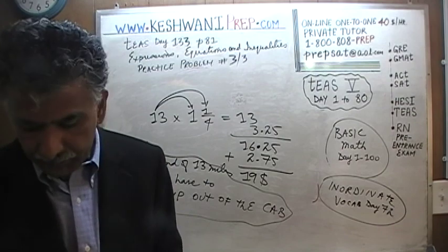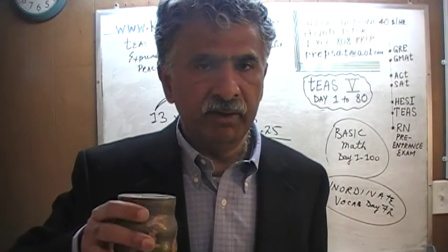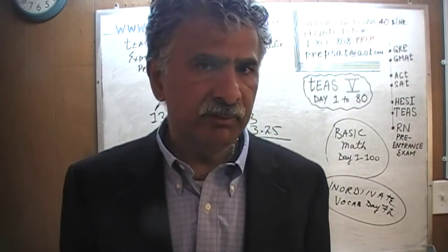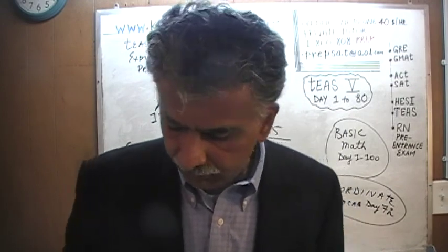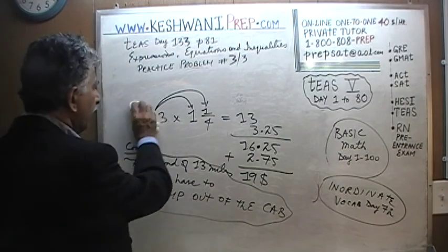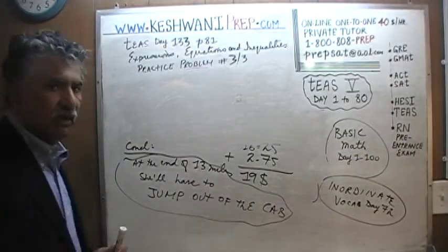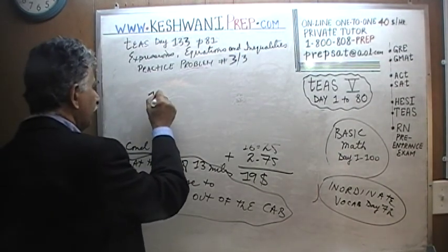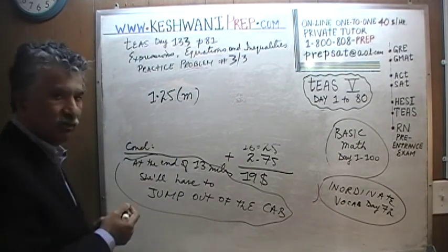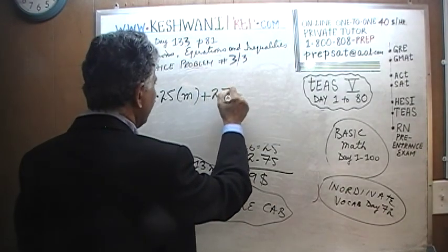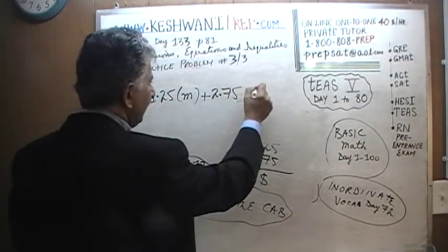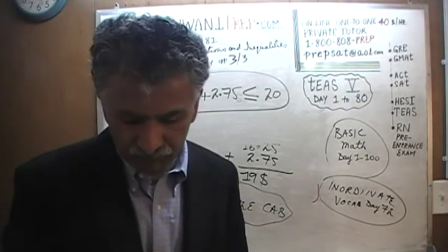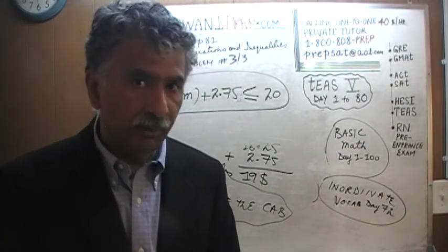All of this extra work was not required. On the exam, they do not ask you to solve for M or find its value. They simply wanted the right inequality, which we arrived at in the very beginning — very simply. It is $1.25 per mile times M miles, plus the $2.75 you pay to get in, and that quantity has to be less than or equal to $20. To arrive at that inequality should take no more than a few seconds. I will see you tomorrow. Bye now.